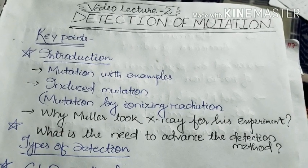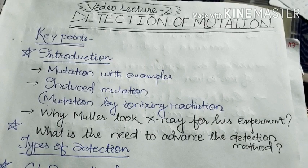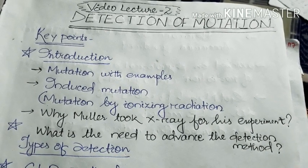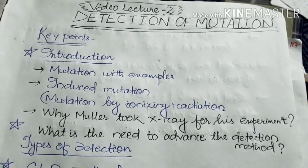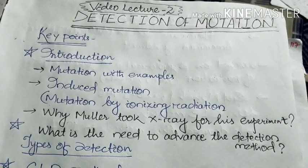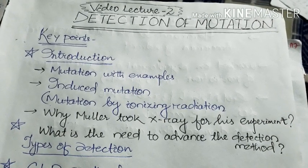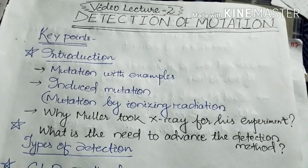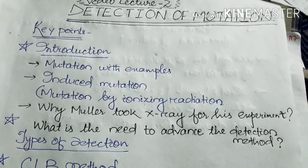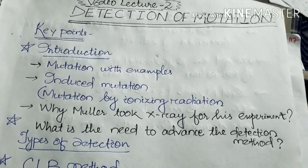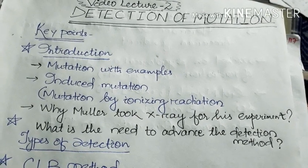There are so many types of mutations — like forward and backward mutations on the basis of direction, then germinal and gametic mutations. These are all types of mutation. The particular detection method we will read today is based on induced mutation.